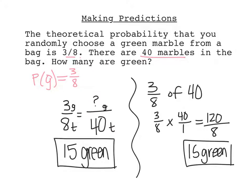Another method we could have used is we could have taken 3 eighths and turned it into a percentage, and that would be about 37.5%. And then we could find 37.5% of 40 using any one of the methods that we know. And we would still end up with 15 green marbles.